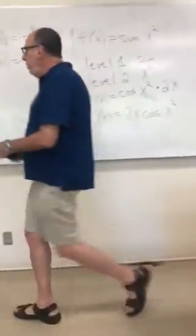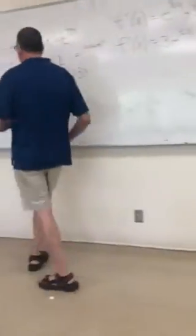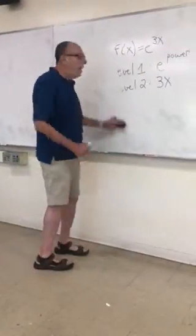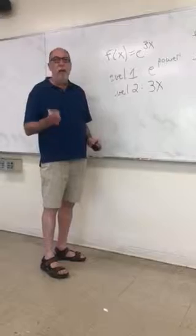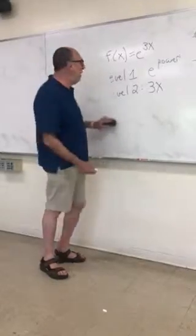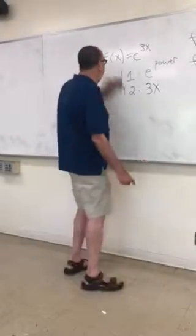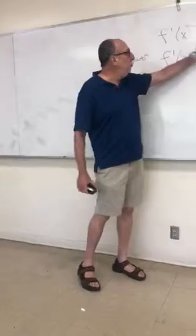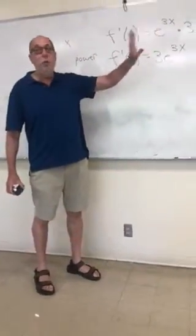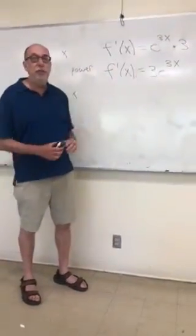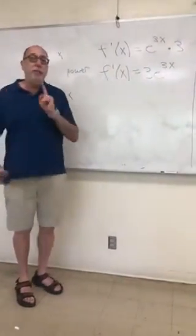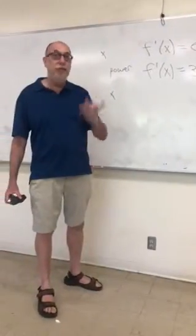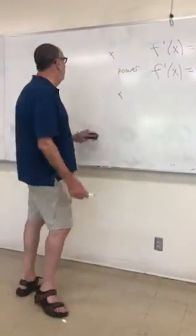Let me show you another example. We've looked at complicated angles and complicated powers of e, and if you had 2 to the 3x it would be exactly the same thing — except remember, the derivative of 2 to the x is 2 to the x times ln 2.